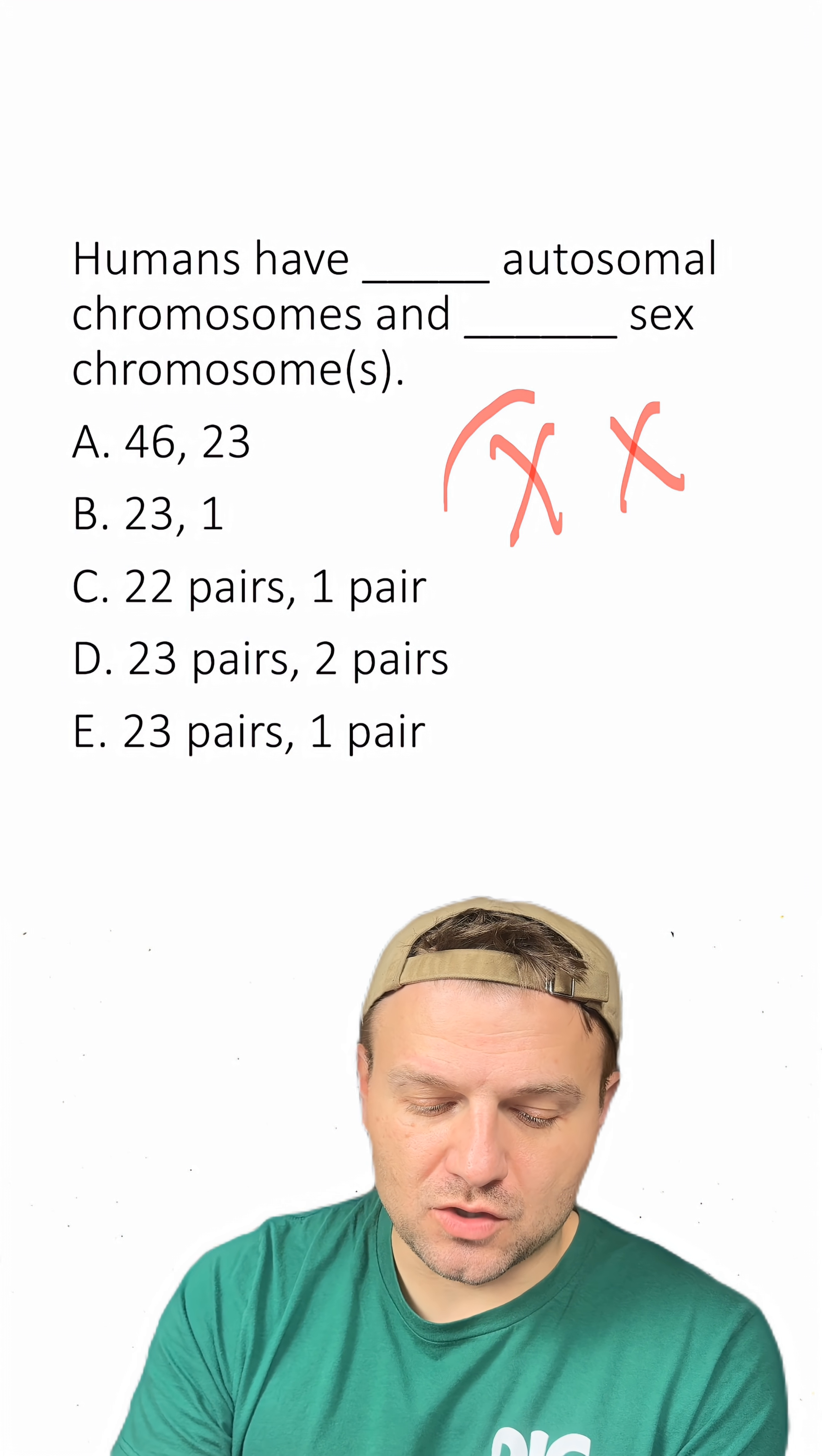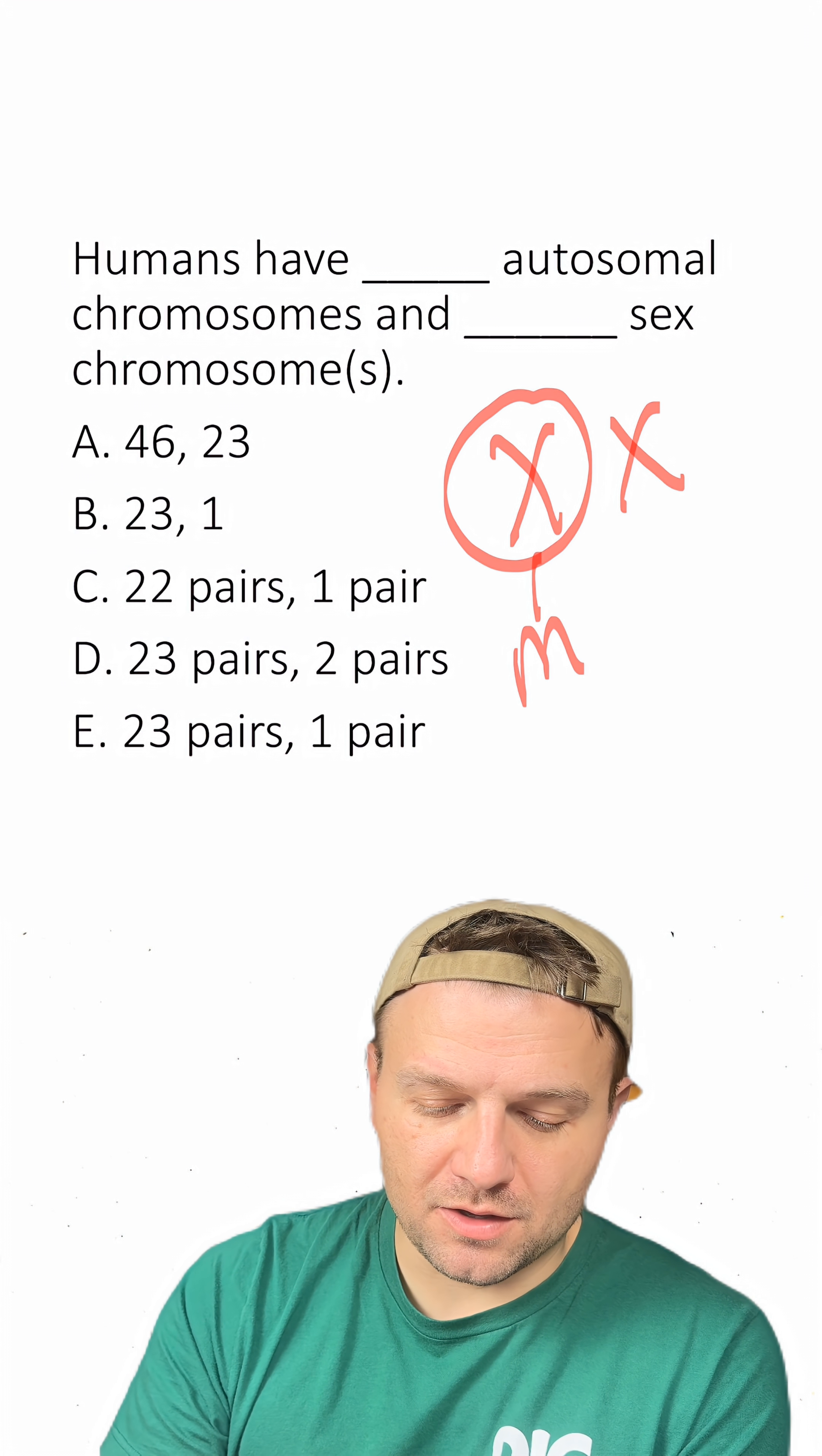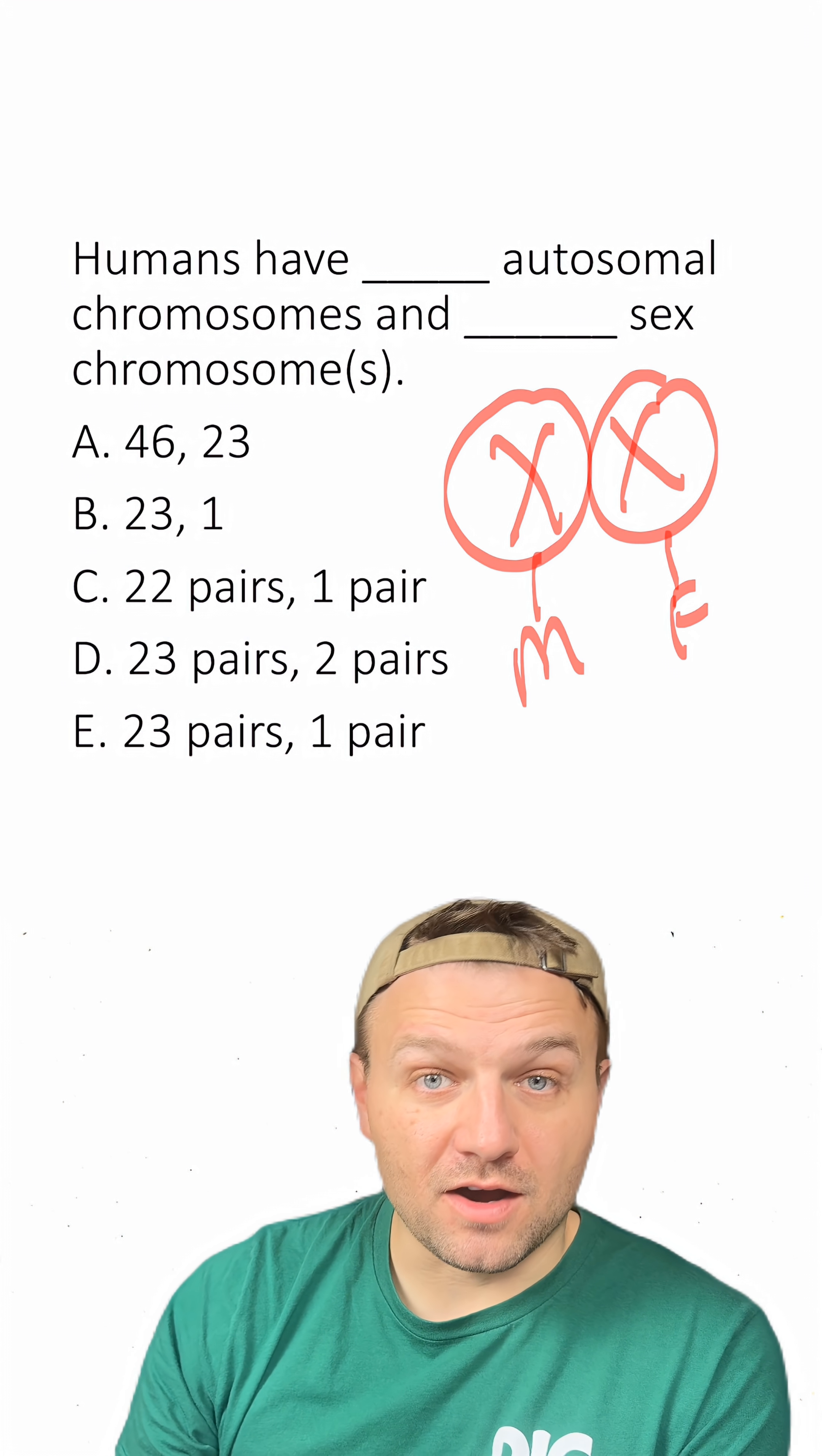When we look at these homologous chromosomes, one of them usually comes from the mother, while the other comes from the father.